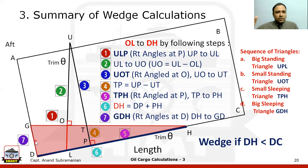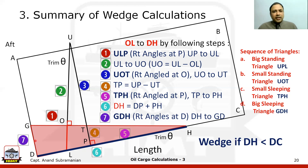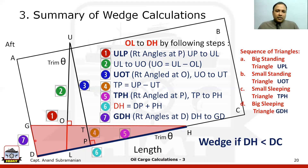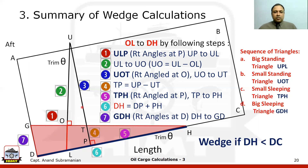Once you do a couple of numericals on wedge calculations, you don't need to worry about large, small, standing, or sleeping triangles — it comes automatically. But initially, if you get the flow wrong it becomes very difficult, so this sequence is just an aid for memory as to what triangles to perform and in what order.